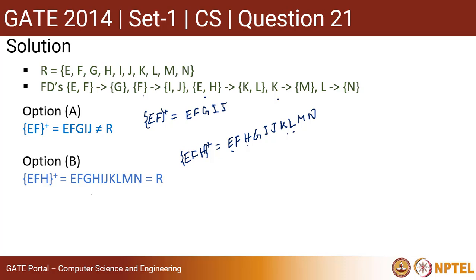So it includes everything, which means it covers the entire R. Let us see option C. EFH is already there inside it, so it automatically covers everything but it is not minimal. So it is basically a super key but not a key.